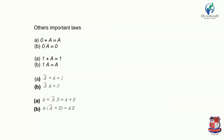We have already provided the proof of these laws with examples and added values. Furthermore: a PLUS (ā AND b) = a PLUS b, and a AND (ā PLUS b) = a AND b. Using these laws and properties, the complexity of Boolean expressions can be reduced to a very good level.